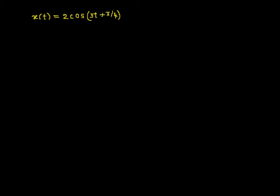Welcome to the video lecture on Periodic and Aperiodic Signals. In this video we will consider an example x(t) = 2cos(3t + π/4). The task is to determine whether this signal is periodic or not, and if periodic, what is the fundamental period.